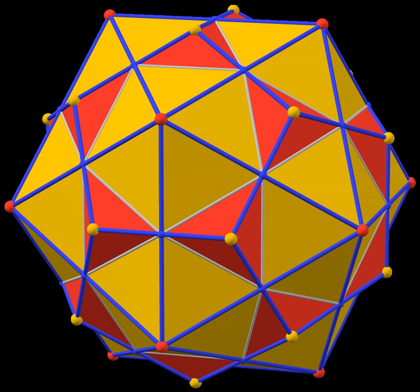In geometry, Euclidean space encompasses the two-dimensional Euclidean plane, the three-dimensional space of Euclidean geometry, and similar spaces of higher dimension. It is named after the ancient Greek mathematician Euclid of Alexandria.